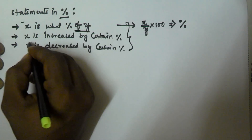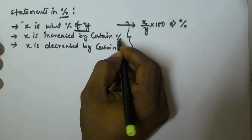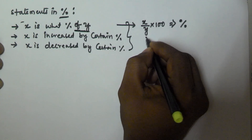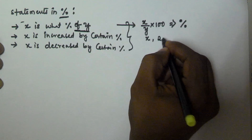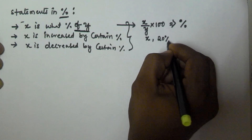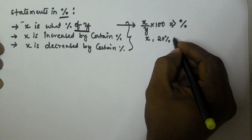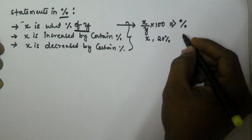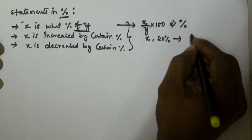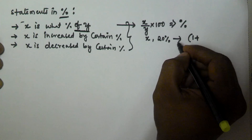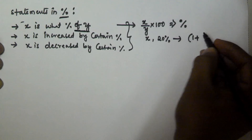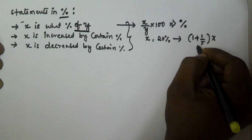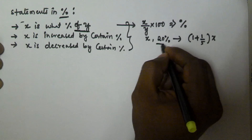For 'x is increased by a certain percentage' — if x is incremented by 20%, we already have 100% of x, and we need to add 20%. The fraction equivalent to 20% is 1/5. So the new value after increasing by 20% is x plus (1/5)×x, which equals (1 + 1/5)×x.